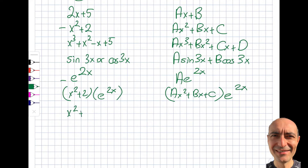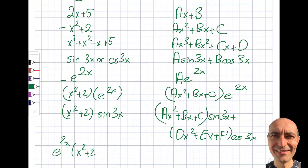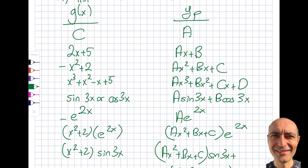For a combination like (x² + 2)·sin(3x), the trial solution becomes (A·x² + B·x + C)·sin(3x) + (D·x² + E·x + F)·cos(3x). You now have six unknowns to find. For the hardest case — e^(2x)·(x²+2)·sin(3x) — the trial form is (A·x² + B·x + C)·e^(2x)·sin(3x) + (D·x² + E·x + F)·e^(2x)·cos(3x).